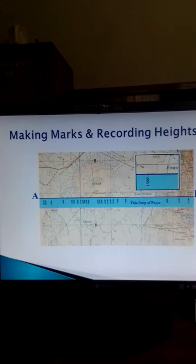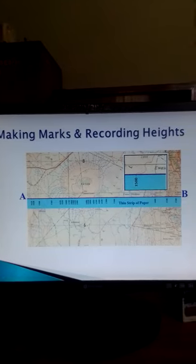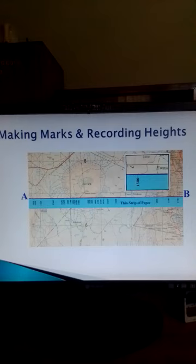After that, we make marks and record the height on the strip of paper. You look at the map and identify contour lines that cross the transect. For example, this is a portion of this transect that has been magnified.